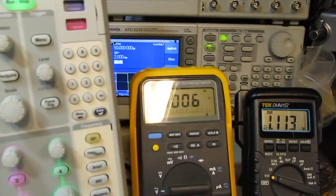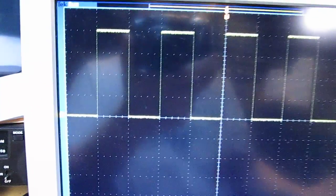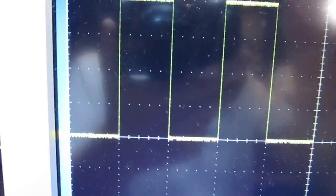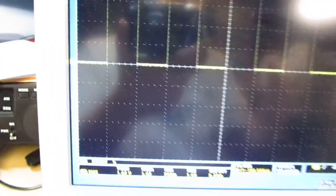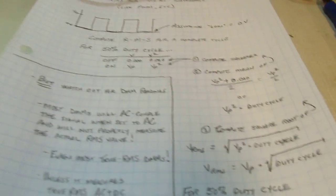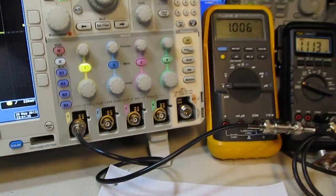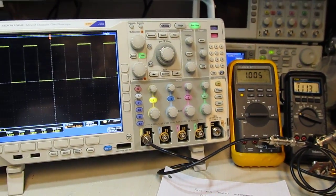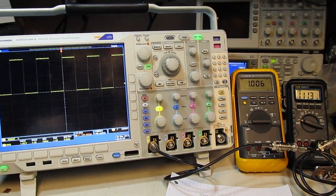So just something to be careful of, especially if you're using the RMS voltage to calculate the amount of power that's dissipated in a load or that you're going to deliver from a source, so that you don't underestimate it by believing the meter without seeing what's going on. So anyway, I hope this was helpful. Give you a little bit better understanding of what we mean by RMS voltage. Thanks again for watching.